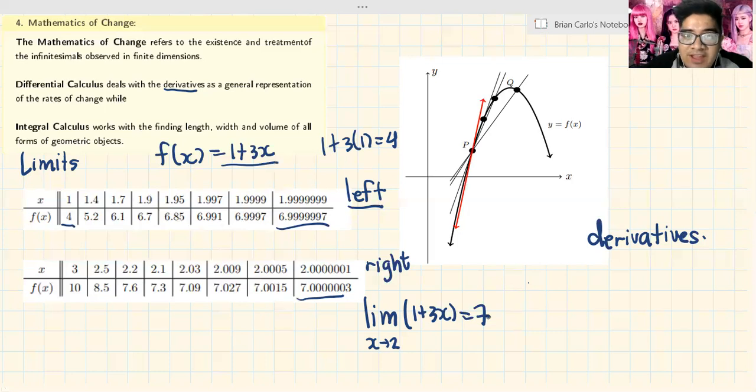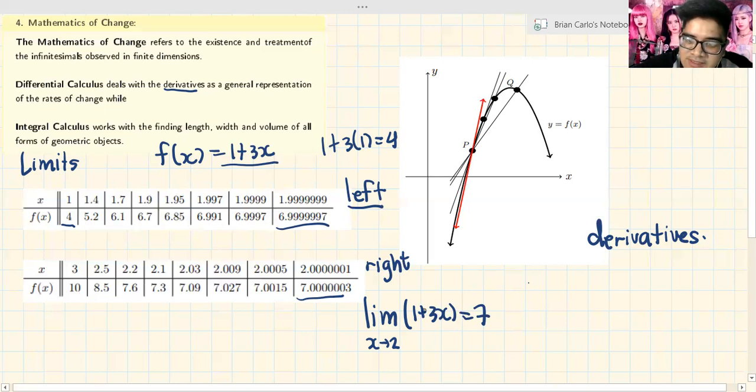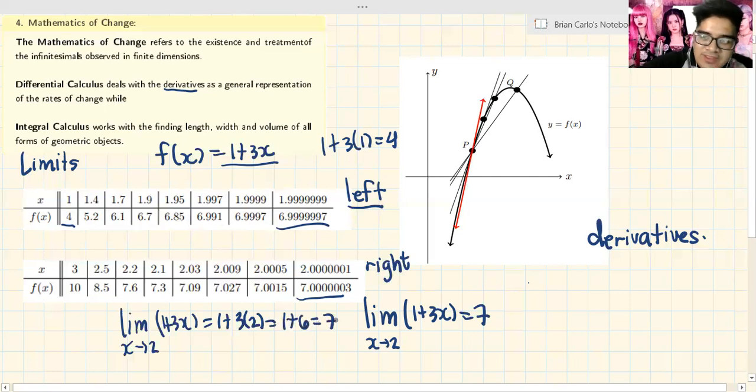Next, you take from the right. From the right means on the right side. What are to the right of 2? Like 3, 2.5, 2.2, 2.1, 2.03, 2.009, 2.005, and 2.00001. As you can see, if you substitute the values of x to this function, you'll get a number approaching 7 again. So what is the conclusion? By this observation, the limit of the function 1 plus 3x as x approaches 2 - from the left it approaches 7, and from the right it approaches 7 - the answer is basically 7.